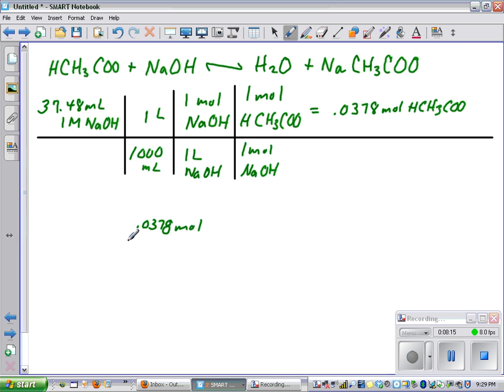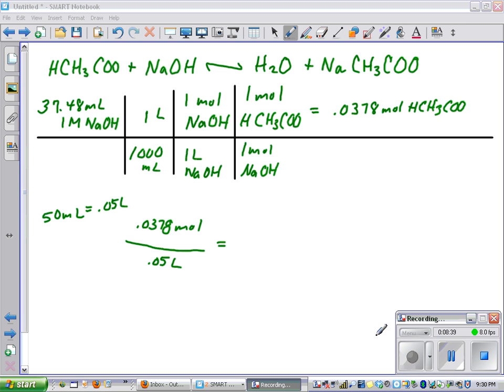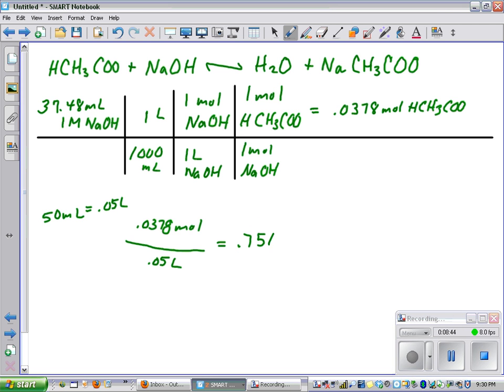So simply divide by the original sample size, which was 50 milliliters in this case, and 50 milliliters is equal to 0.05 liters. So divided by 0.05 liters equals, and this equals 0.756 molar acetic acid.